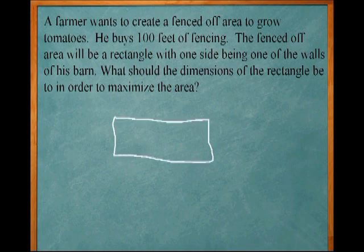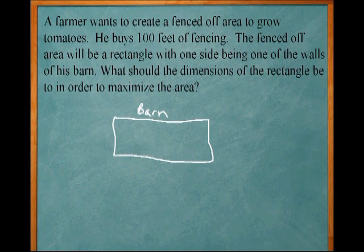One of its sides is going to be the barn wall, so let's say the top is the barn wall. I'm going to use the left, the right side, and the bottom side to fence off. You have 100 feet of fencing, so I'll call the length of this side X, and this has to be the same length, so X.